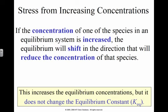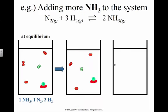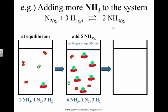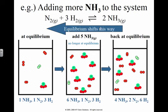If I increase the concentration of one of the species in an equilibrium system, then the equilibrium will shift to try to reduce that stress. This will not change the value of K. So let's say I have a system at equilibrium and I add ammonia — now I have too much ammonia, and so the reaction will shift towards the left to try and produce more nitrogen gas and more hydrogen gas, reducing my amount of ammonia.